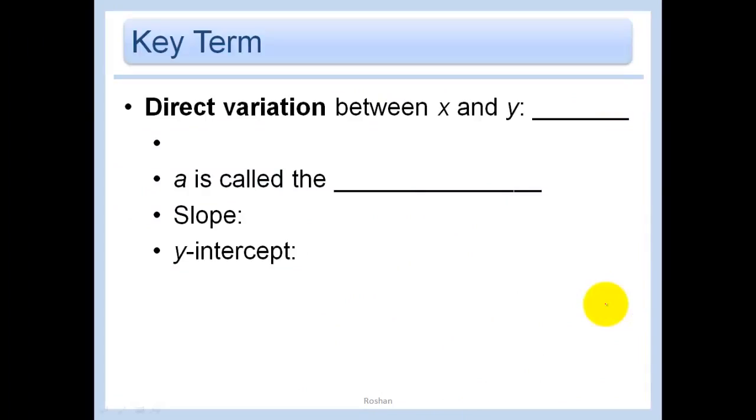Direct variation between X and Y means that Y equals A times X, where A is just a constant. What does that mean? It means Y varies directly with X. A, which is our constant, is called the Constant of Variation.